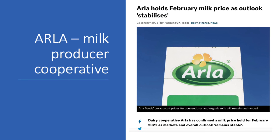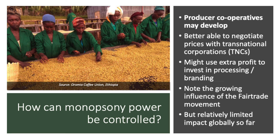Here's a good example of a producer cooperative, owned by nearly 10,000 farmers across Europe. Arla Foods is home to household brands such as Castello, Cravendale Milk and Lurpak. Producer cooperatives are better able to secure a better price for their farmers, negotiate with transnational corporations, and use higher prices and profit to increase investment in processing and branding.